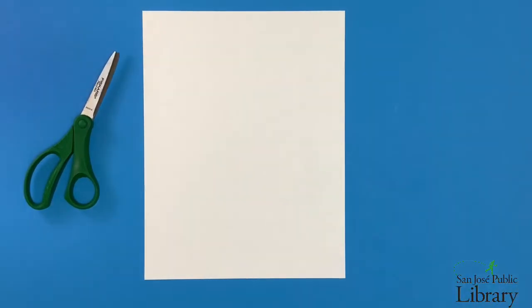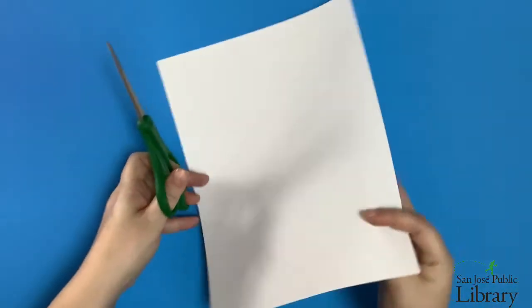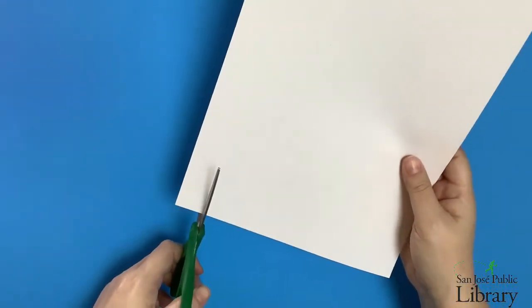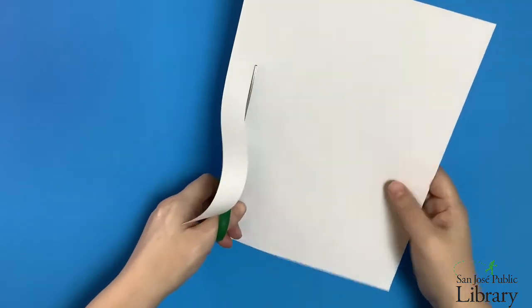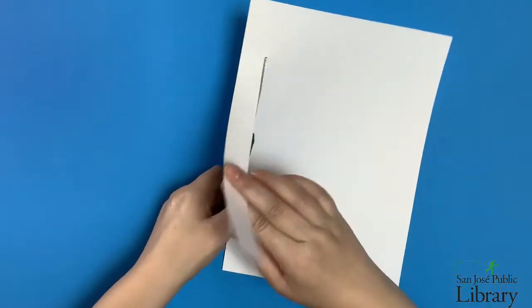We'll begin by cutting a strip of paper from the long edge of our sheet of paper. I'm making a fairly narrow strip about three quarters of an inch wide. You can make a wider strip if you want a larger Hexaflexagon.